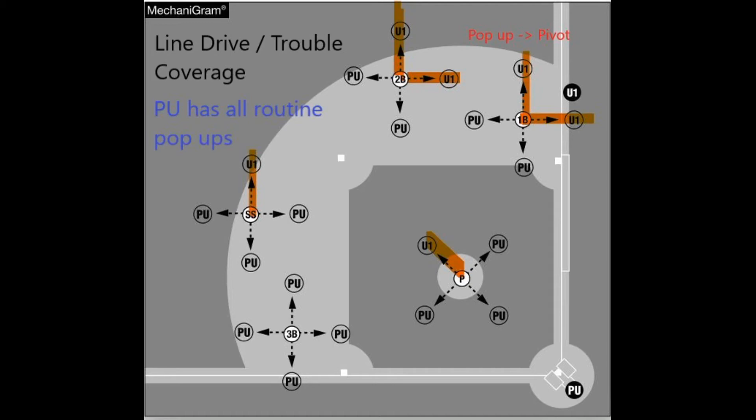A non-routine catch-no-catch in the infield, for example line drives or trouble catches, the highlighted lines show the responsibility of U1. So U1 is responsible for line drives hit at the shortstop going to his left, line drives hit at the second baseman going to his left, line drives hit at the first baseman going toward the line, and pop-ups that will turn into trouble by second baseman going backwards and the first baseman going backwards. And of course, he always has the pitcher going backwards.